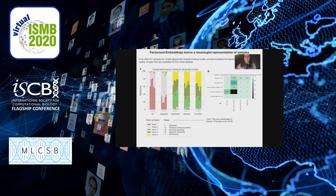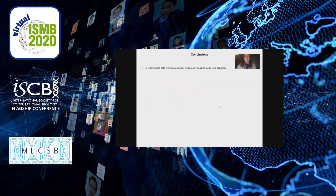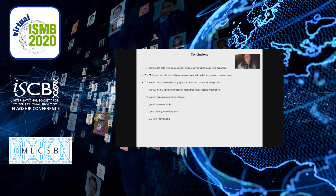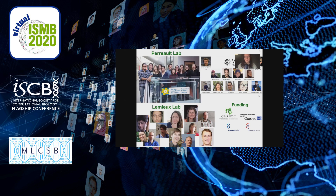In summary, our conclusions are: factorized embeddings reconstructs data with high accuracy and preserves sample pairwise distances; sample embeddings are consistent with individual gene expression levels; the embedding space is dense and allows for interpolation; in 50D, factorized embeddings retains individual-specific information; the learned gene representation reflects gene tissue specificity and some gene-gene correlations; and GO term membership is partially captured. None of this work would have been possible without the members of the Perot Lab, Mila Medical Team, the Lumiere Lab, and the Bioinformatics Platform.